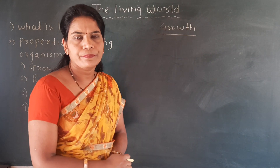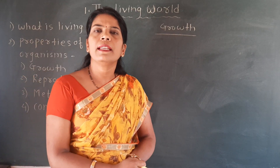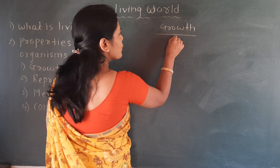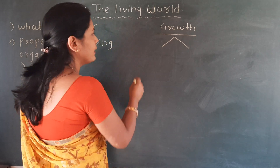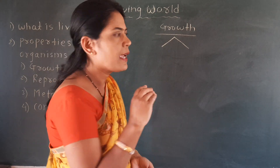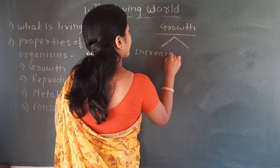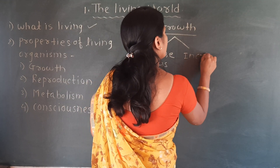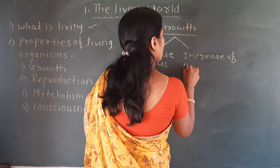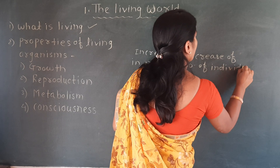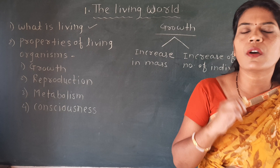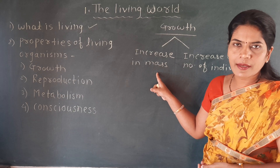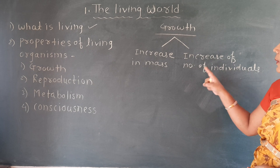Growth is an important property of the living organism because all living organisms show growth. This growth has two characteristics: it can be observed as an increase in mass, and an increase in the number of individuals. That means growth of any living organism can be found in two forms — one is the increase in mass of that organism, and the other is the increase in the number of individuals.